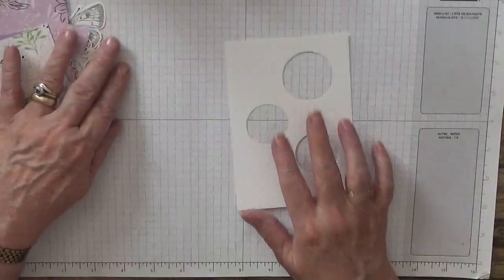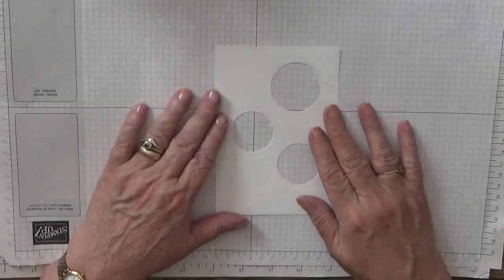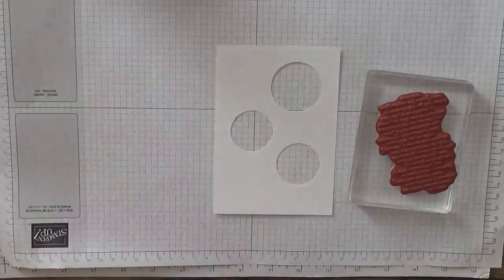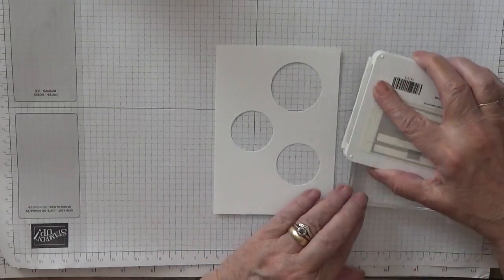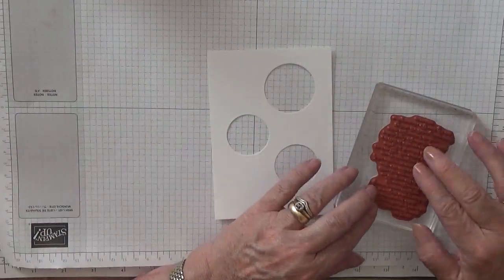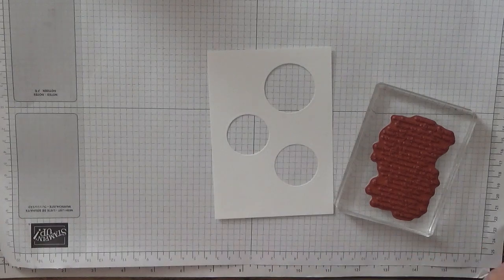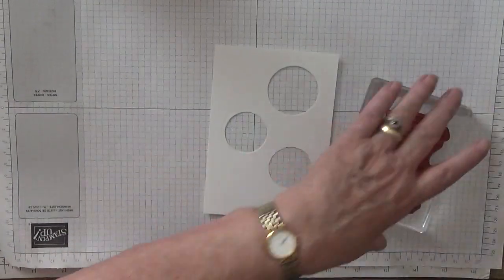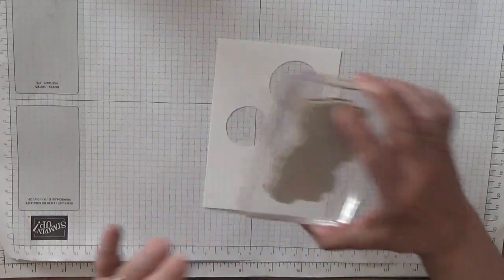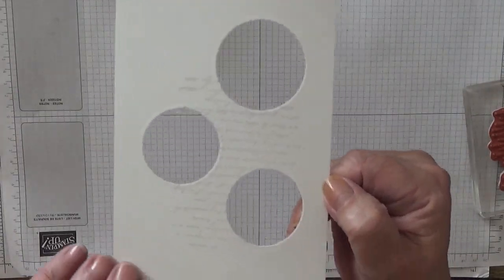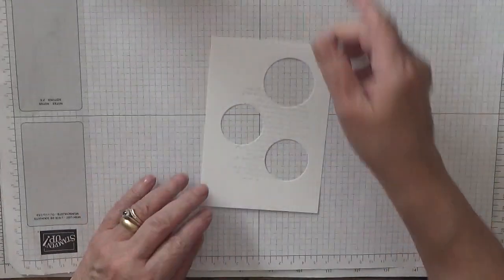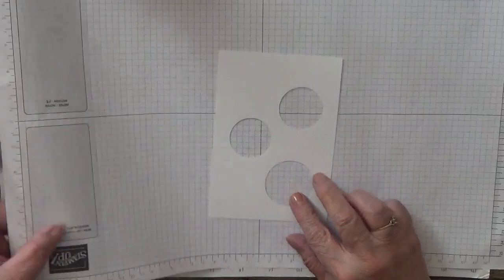I'm going to stamp this script in smoky slate. That's not very straight. I'm just going to stamp that there just so there's a little bit of script. You can't see it most probably here in the background. We don't want it too dark.